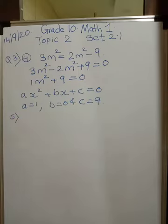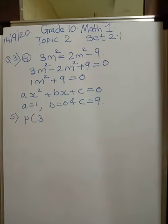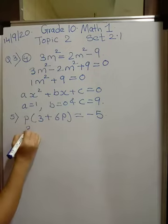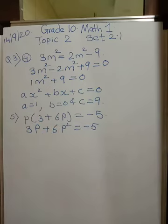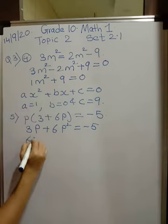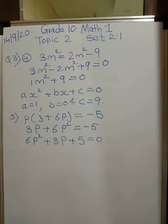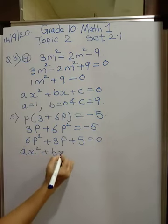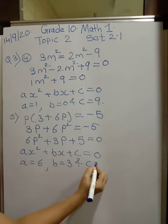Let us go for the fifth problem. Fifth question: p(3 + 6p) = −5. Now let us open the bracket. So we have 3p + 6p² = −5. Rearranging, we get 6p² + 3p + 5 = 0. Comparing this with ax² + bx + c = 0, we have a = 6, b = 3, and c = 5.